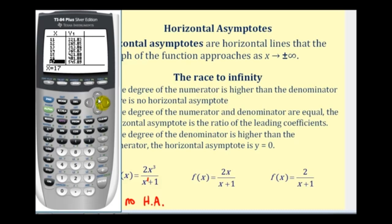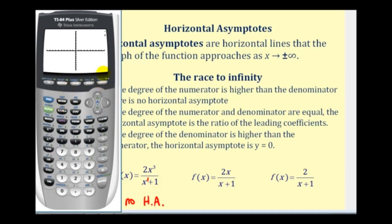Here's an illustration of why there's no horizontal asymptote. Looking at the graph, as we move right the graph moves up indefinitely, or if we move left it moves down indefinitely. Therefore, there's no horizontal asymptote.